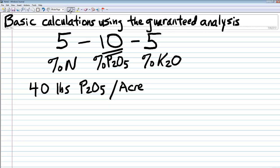What will work and what does make intuitive sense is if I take the 40 pounds of P2O5 per acre and divide that number by the phosphate analysis which is 0.10. Anytime you divide by a fraction, that's going to give you a much larger number. In this case, it's going to be 400 pounds of 5-10-5.